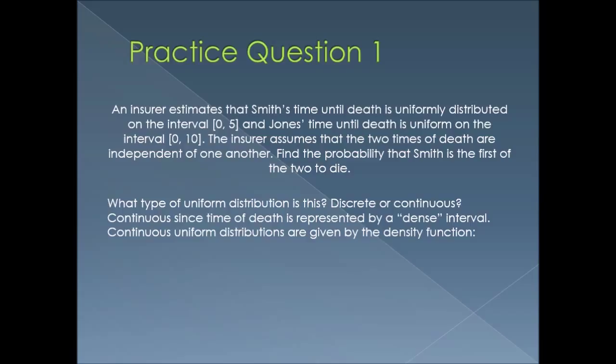We wouldn't say that Smith is going to die in exactly one year, exactly two years, exactly three years — because Jones could really die at one year, or one and a half years, or one and three quarters of a year. There are a lot of possibilities, which is why the interval is dense.